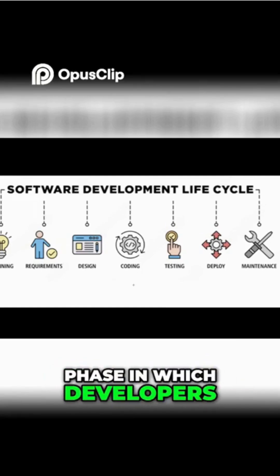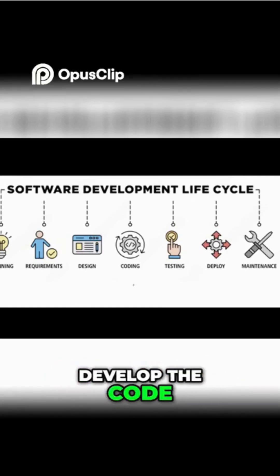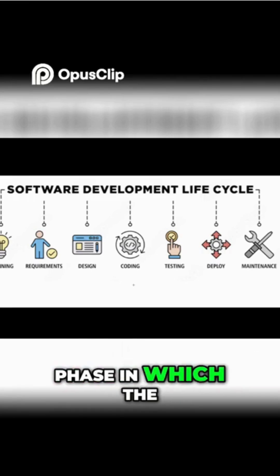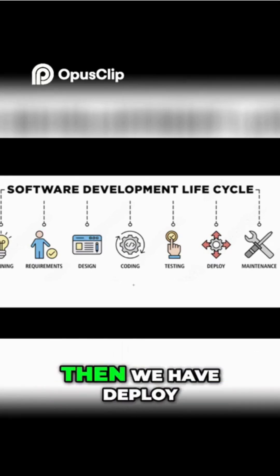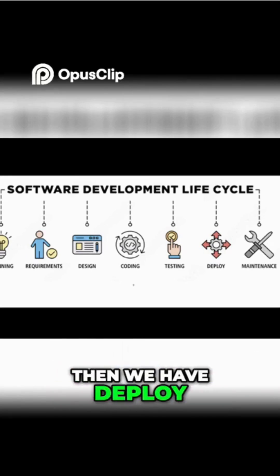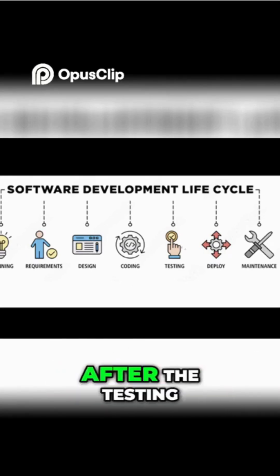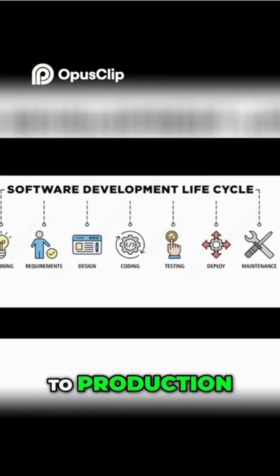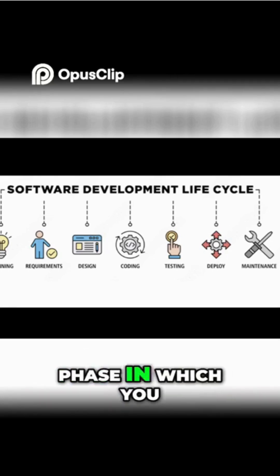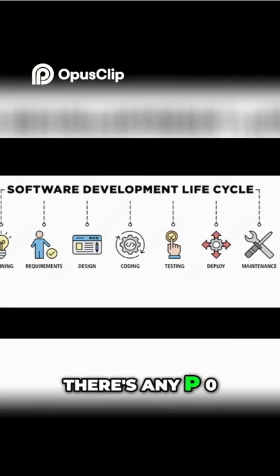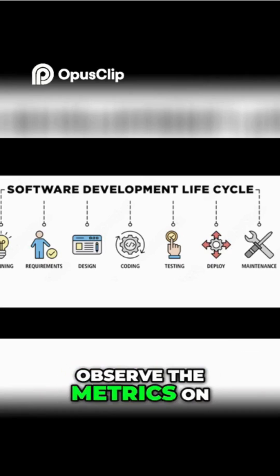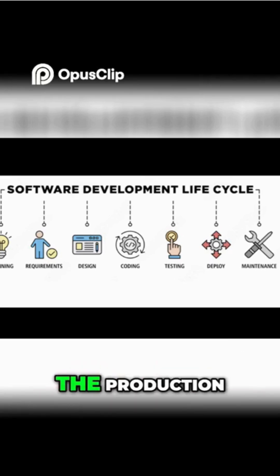Then we have the coding phase, in which developers write the code. Next is the testing phase, where end-to-end testing is done. After that is the deploy phase, where the tested code is deployed to production. Finally, we have the maintenance phase, where you monitor bugs — such as P0 and P1 issues — and observe metrics to understand how your product is performing.